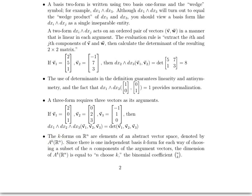Since there's one independent basis k-form for each way of choosing a subset of the n components of the argument vectors, the dimension of this space is equal to n choose k, the binomial coefficient. So the dimension of the space of k-forms on R^n is n choose k. Think about it: if you have two-forms on R^3, that would be 3 choose 2, because you could use dx_1 wedge dx_2 as one element of that basis, dx_1 wedge dx_3 as another element, and dx_2 wedge dx_3 as another element. So that's how you'd end up with 3, which is what 3 choose 2 equals.